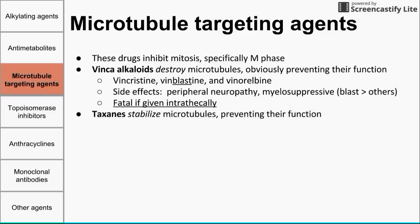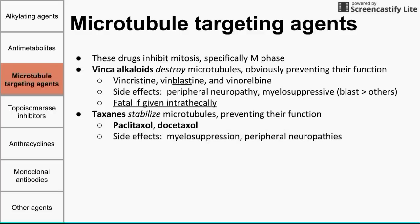The next group of microtubule targeting agents are the taxanes. Taxanes stabilize microtubules, which prevents them from pulling chromosomes apart during metaphase. So vinca alkaloids destroy microtubules, while taxanes stabilize them — both render them useless. Two taxanes important to know are paclitaxel and docetaxel. Side effects include myelosuppression and peripheral neuropathies.